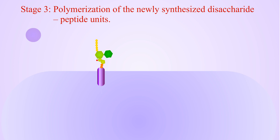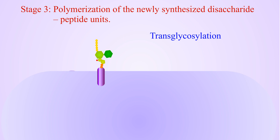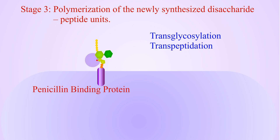Stage 3: Polymerization of the newly synthesized disaccharide peptide units. Now, the final stage of peptidoglycan synthesis will occur on the outer side of the cytoplasmic membrane. In this stage, transglycosylation and transpeptidation reactions will occur with the help of penicillin-binding proteins.